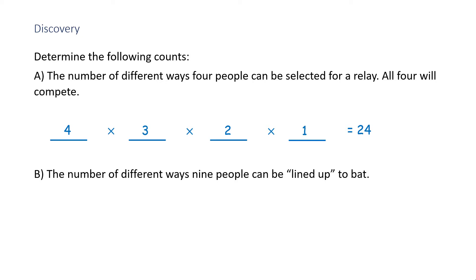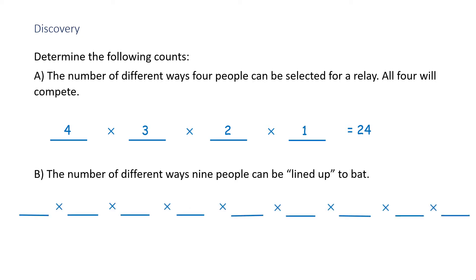Part B: the number of different ways nine people can be lined up to bat. Similar to Part A, but this time we have nine spaces to fill, and we start with nine choices for the first and continue to decrease the number down: eight, then seven, then six, then five, then four, then three, then two, then one. The product is 362,880 possible different batting lineups.